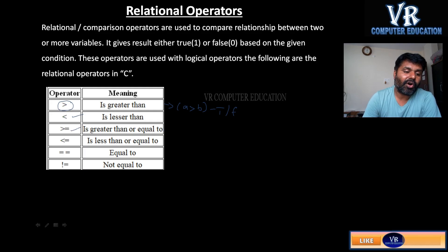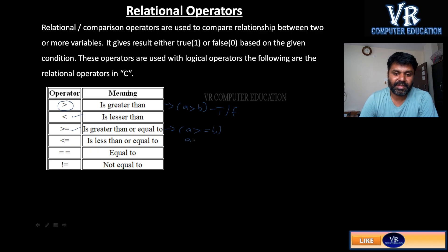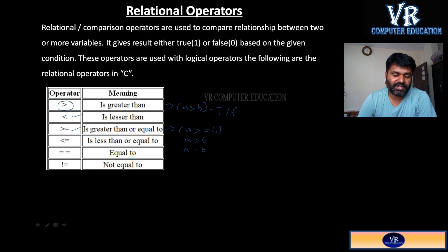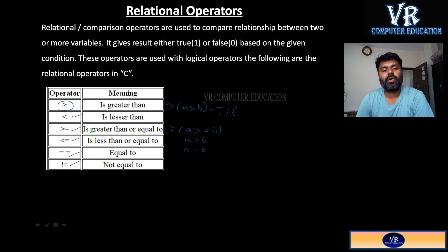Here, greater than or equals to — two conditions are checked. First it will check A greater than B, then it will check A equals to B, and based on that it will give the result. Similarly, less than or equals to: first it checks less than, then equals to. Next is equal to (==), and finally not equals to. So these are the relational operators.